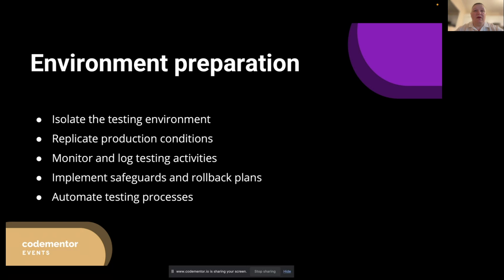Next, replicate production conditions. To get accurate results from our failure testing, we should replicate the production environment as closely as possible. This includes configuring the same hardware, software, network settings, and data. Additionally, we should simulate realistic workloads and user behavior patterns to ensure that our tests truly represent the challenges our applications will face in the real world.